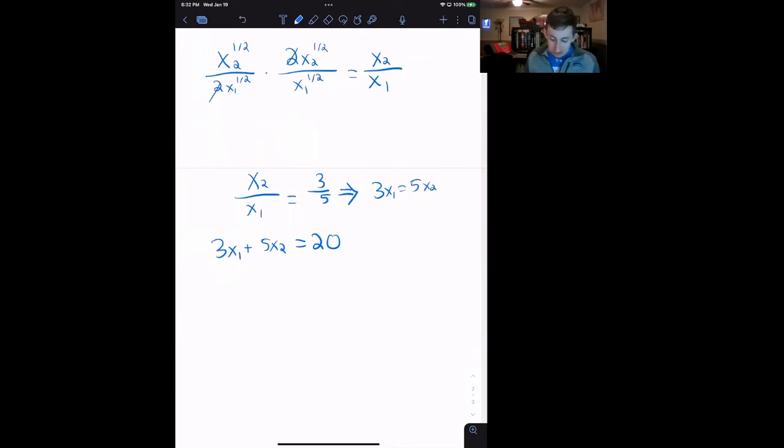I'm going to substitute 5X2 for 3X1 because of this nice equality here. So I'm going to get 5X2 plus 5X2 equals 20. So this is 10X2 equals 20, which says that X2 equals 2.